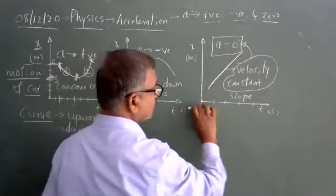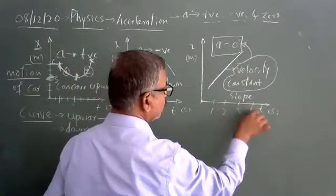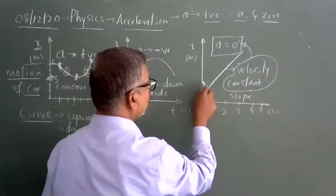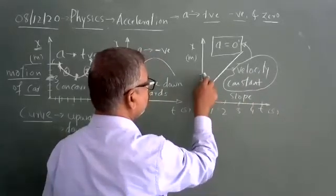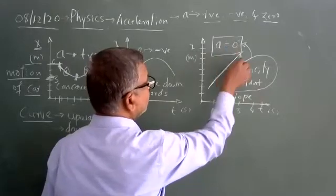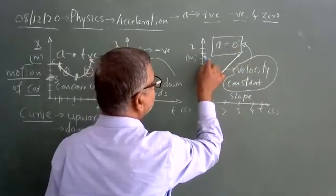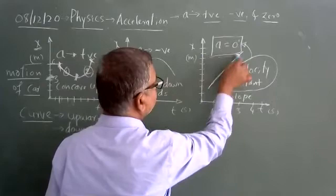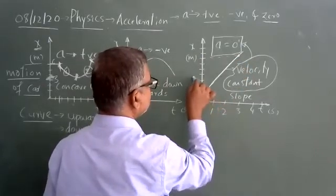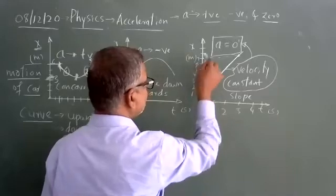Let me start here. Take the time axis: 1 second, 2 seconds, 3 seconds, 4 seconds, 5 seconds. Take position: 1 meter, 2 meters, 3 meters, 4, 5, 6, 7, 8, 9. Now take this point as a reference — it goes and meets here. So x1 equals 7... let me start again. The object starts from here.